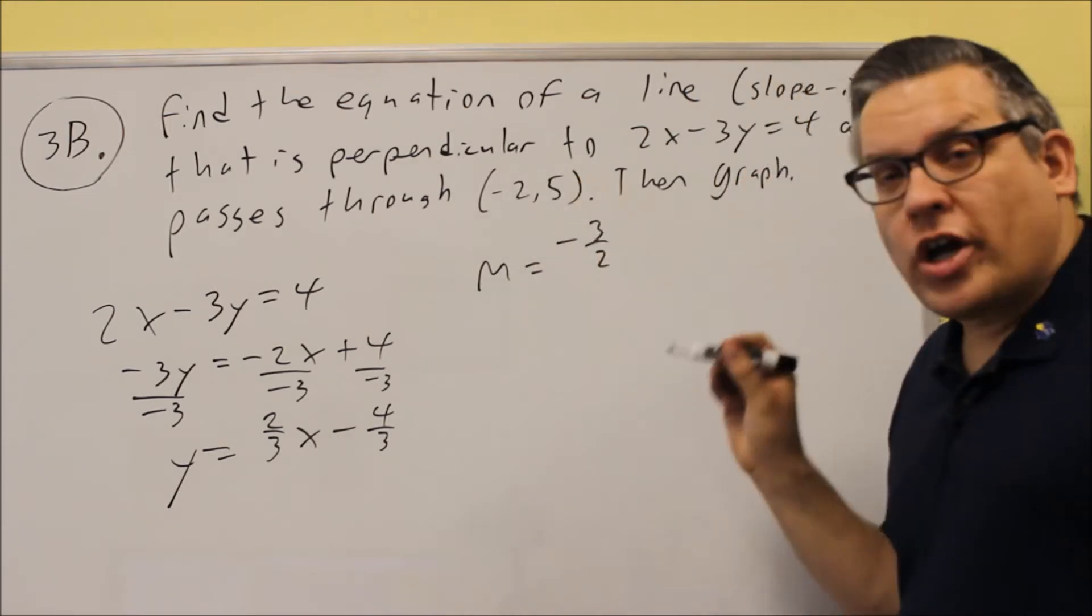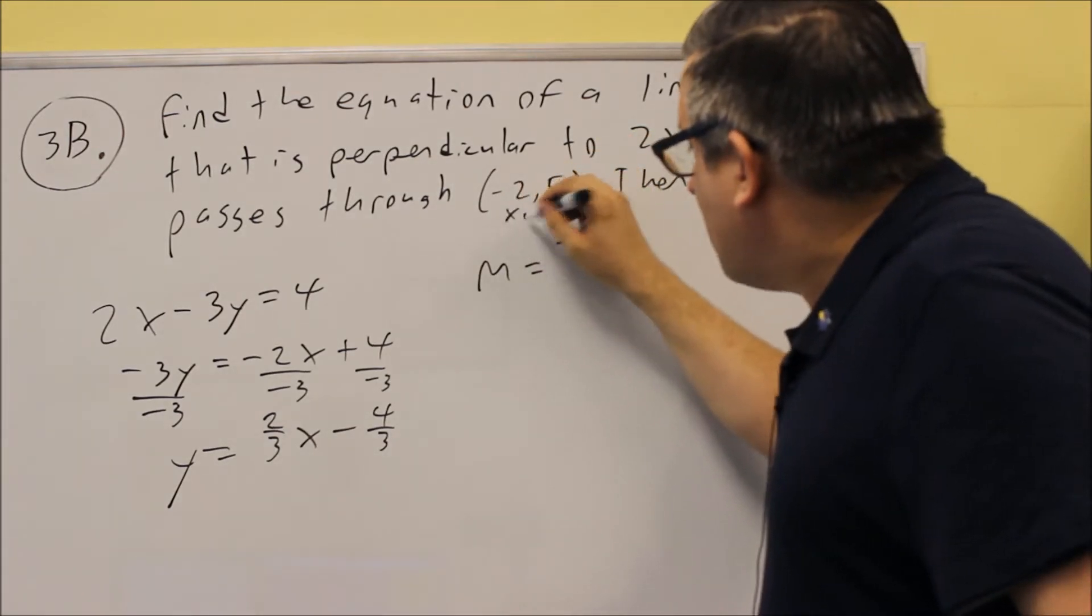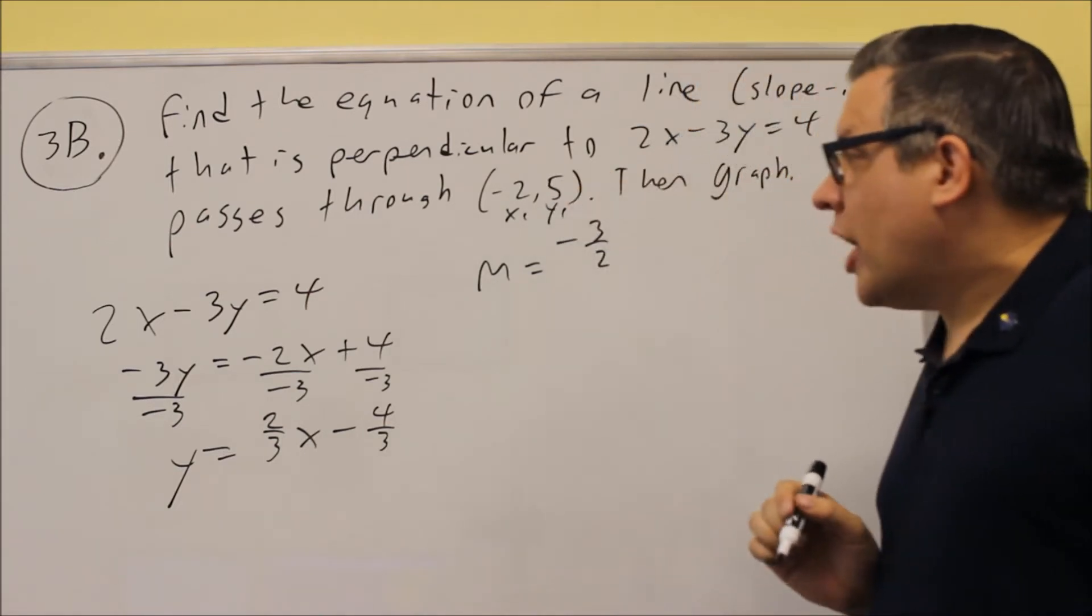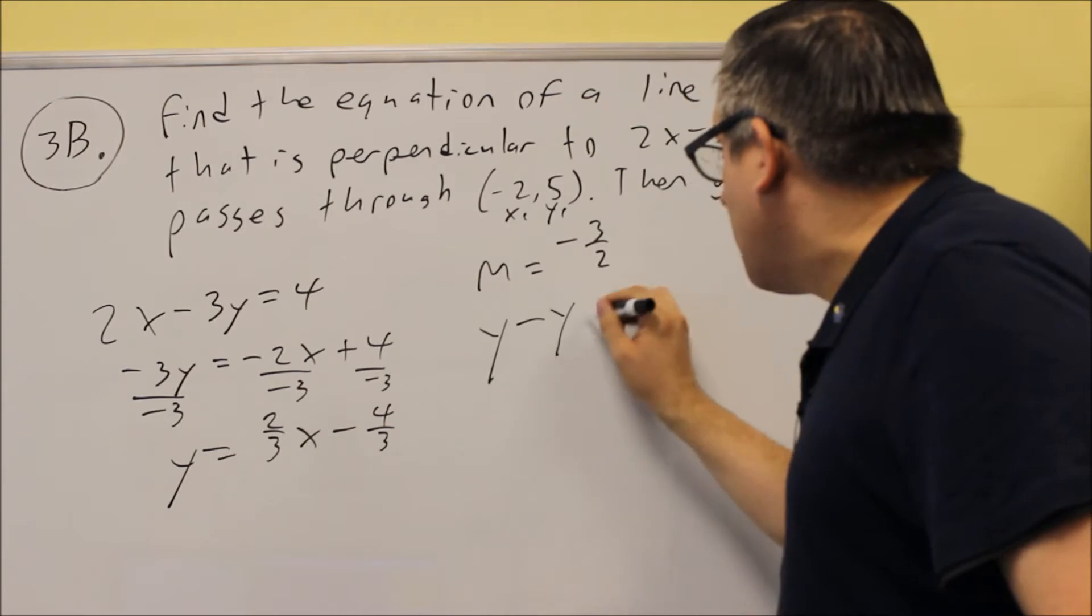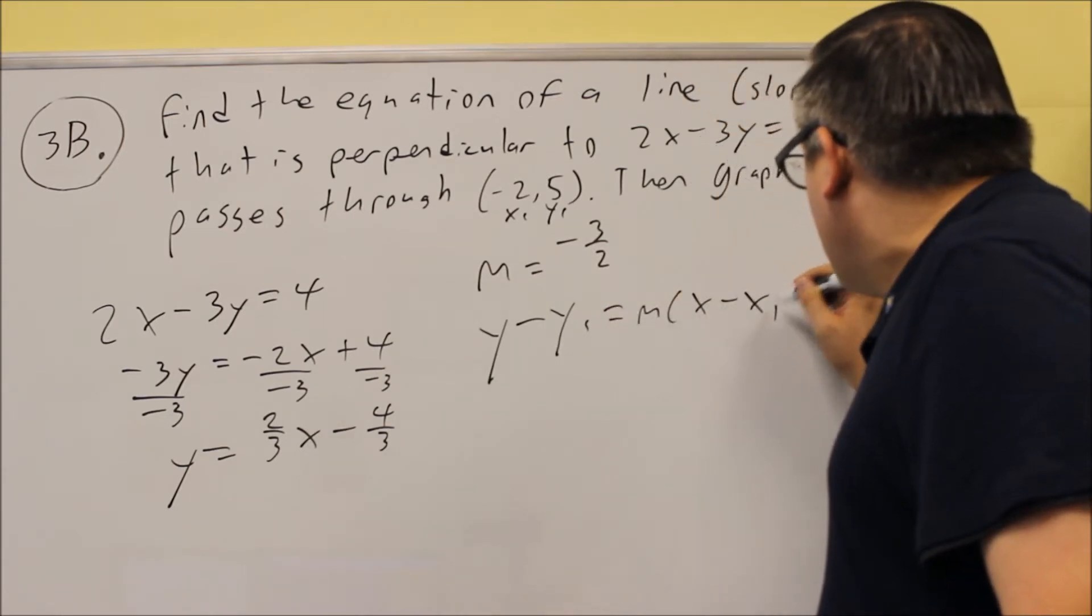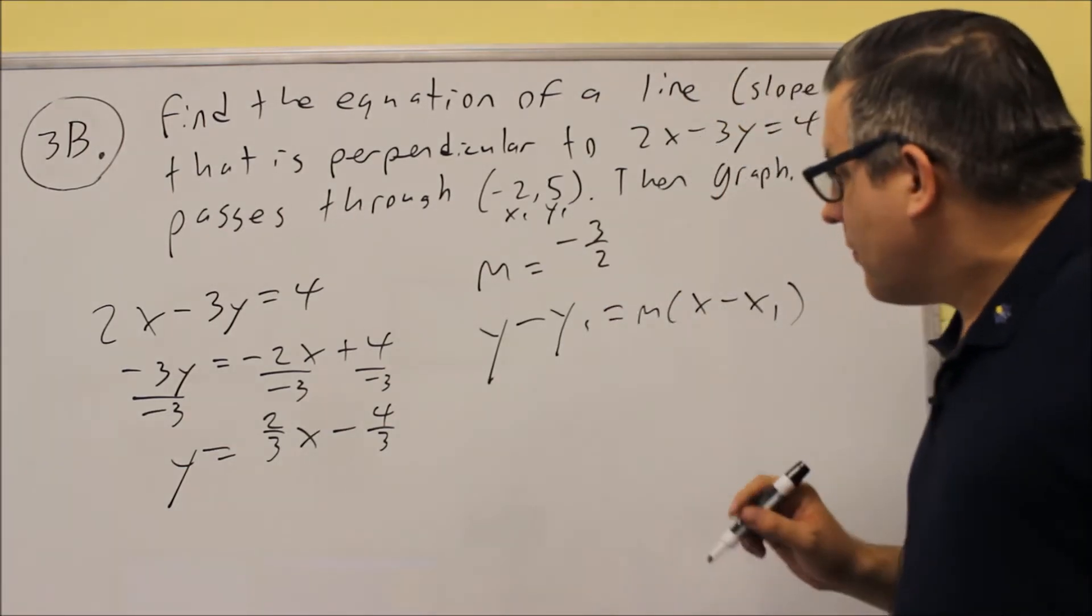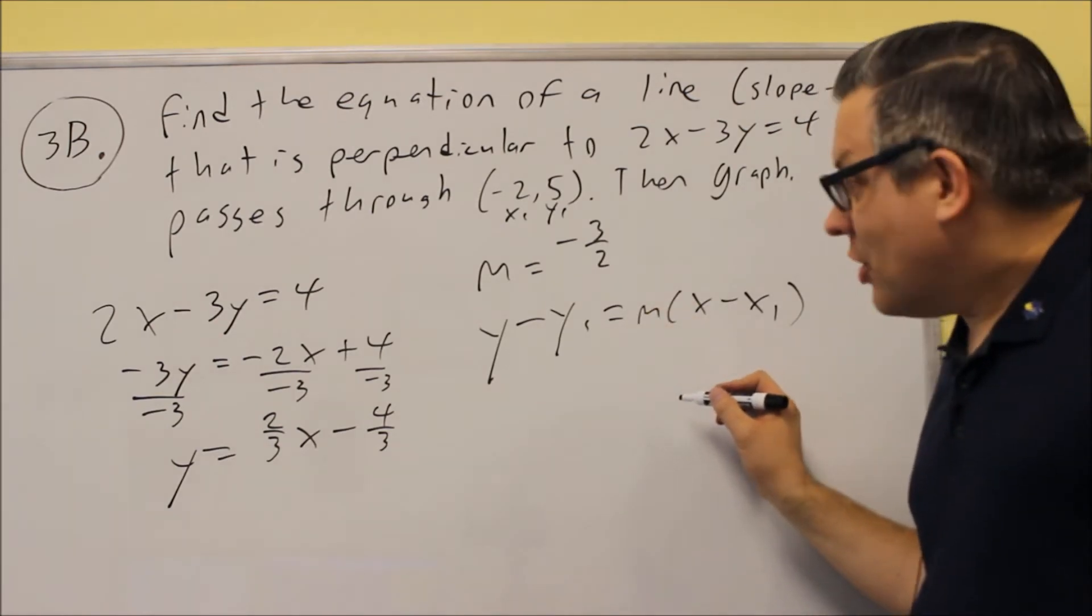We also have this point that's provided. That's going to be X1 and Y1. So these three things you're going to put into the point-slope formula, which is this one here. You want to be familiar with this formula. We're going to plug the information in.